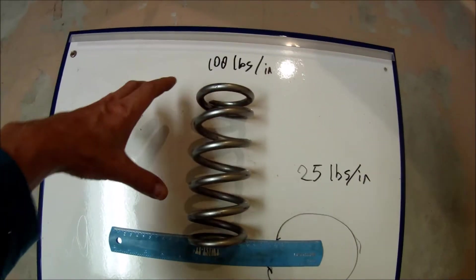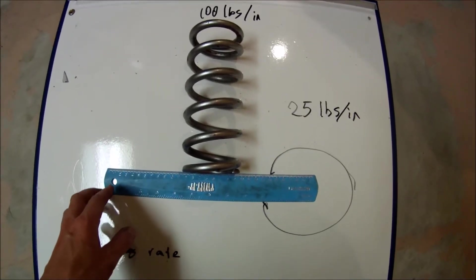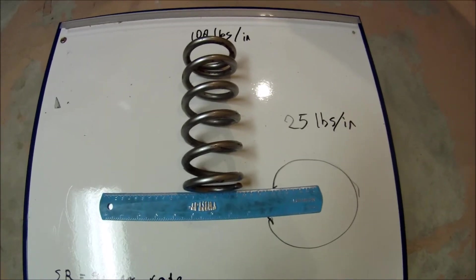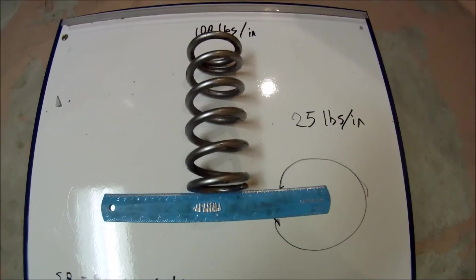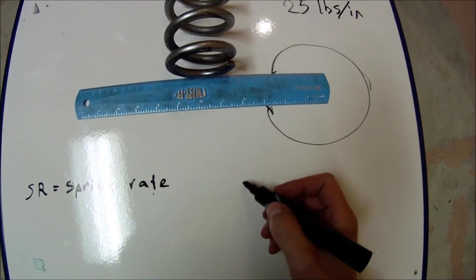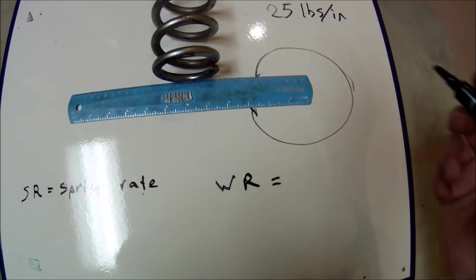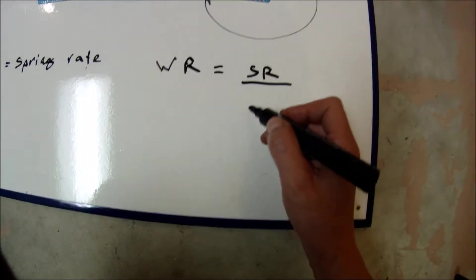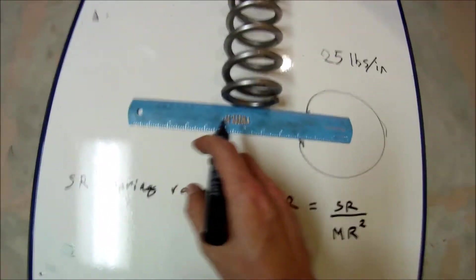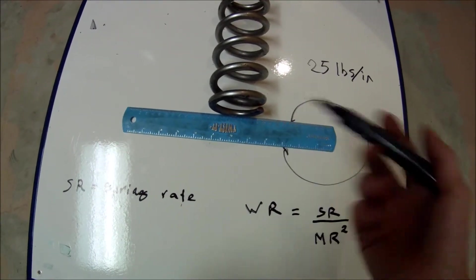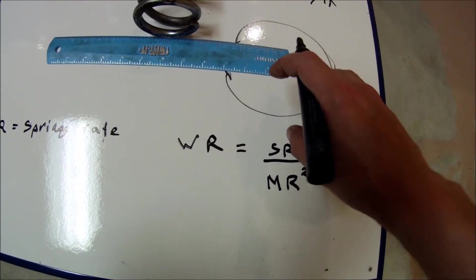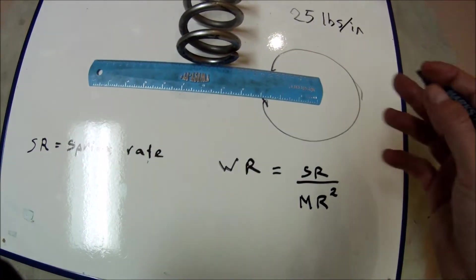So what's the deal? We get a 100-pound spring, a motion ratio of two, but the wheel rate is four times less. It took me a while to figure that out, but wheel rate equals spring rate divided by motion ratio squared. Since motion ratio is 2, two squared is 4, and that's why the wheel rate is 25 pounds per inch.